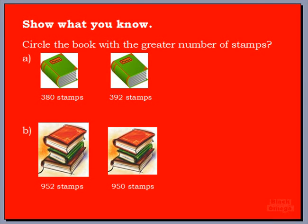Apply the knowledge you got from that video onto this question here and show me what you know. Right in front of us, we want to circle the book with the greater number of stamps. One book has three hundred and eighty stamps and the other has three hundred and ninety-two. If we think about our place values, we look at both numbers — three hundred and eighty and three hundred and ninety-two — and they both have three hundreds.